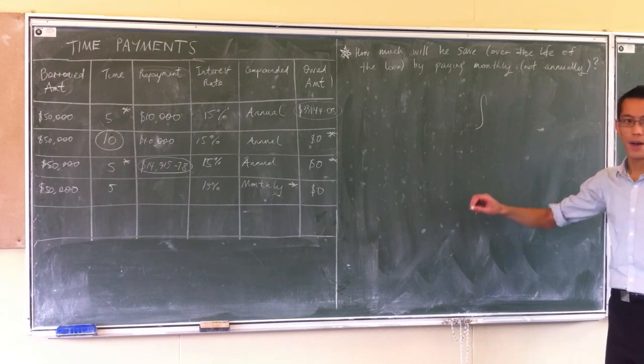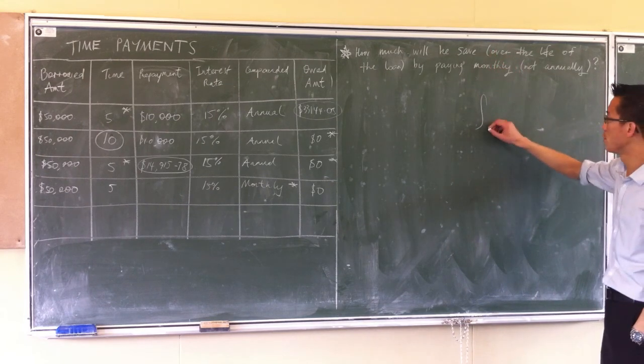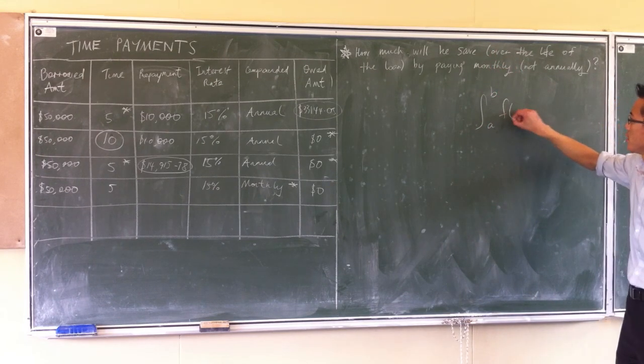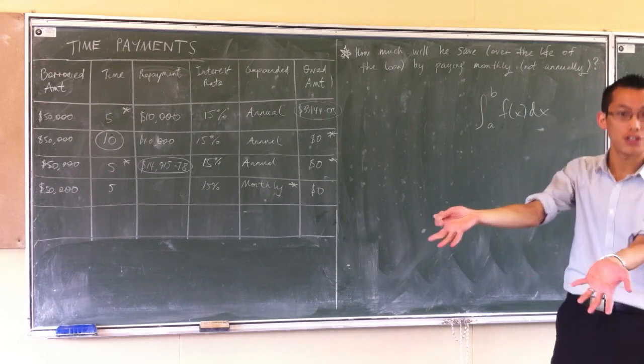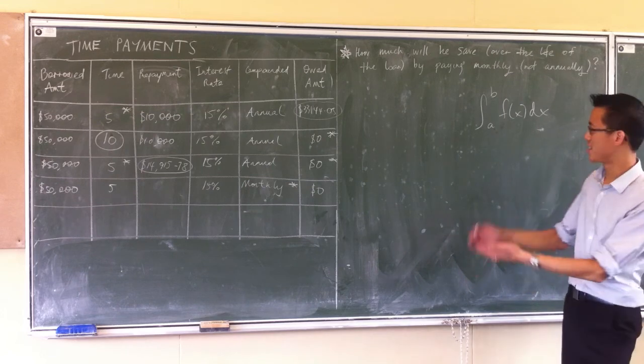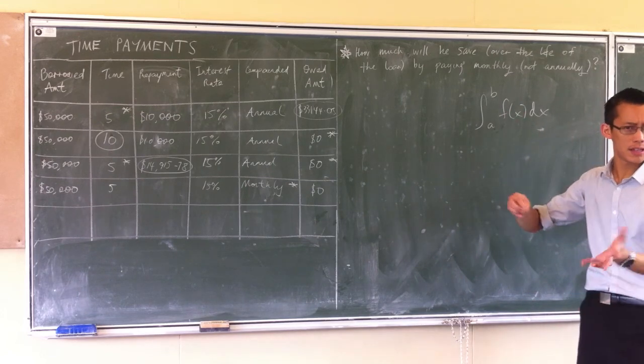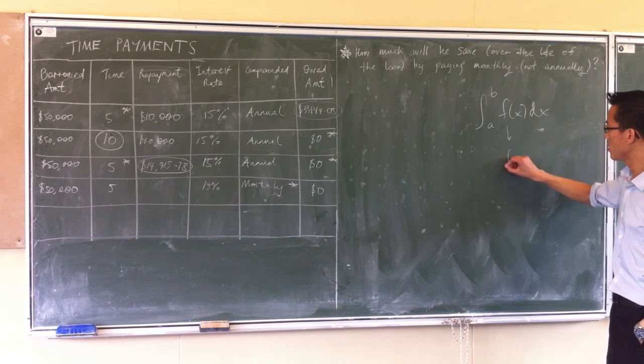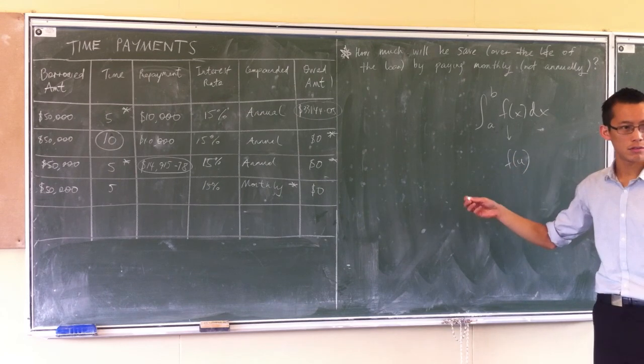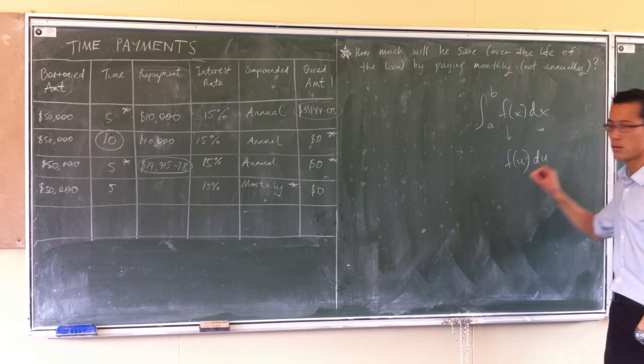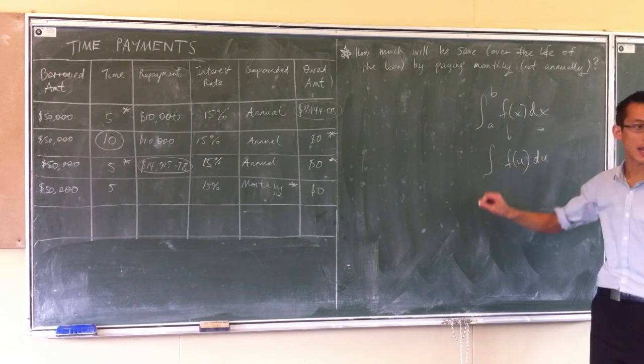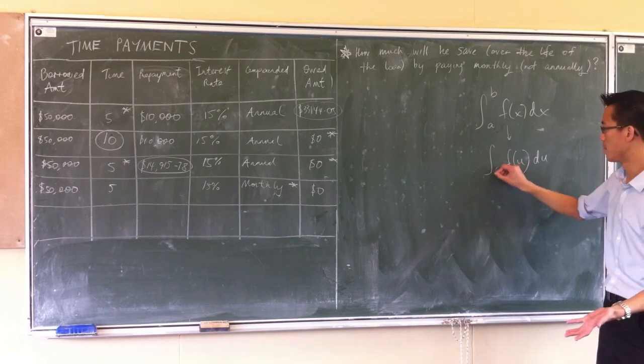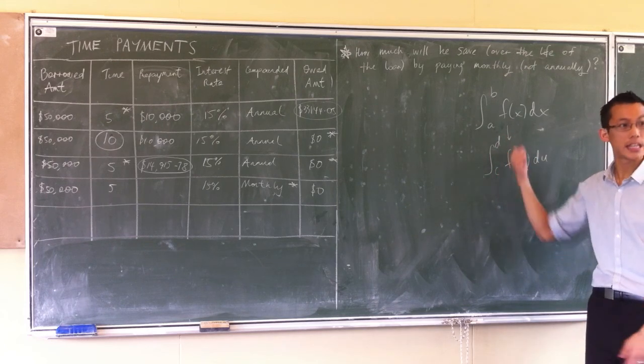And we give you something and we say, integrate, get a definite integral from A to B of some function. And then we say, and use this substitution. So, we change it into, in terms of X's, we change it to U's. You've seen that kind of question? So, what you end up with is you're integrating a function of U with respect to U. Now, when you do that, you can't just leave these limits as they were. You've got to change them to some other limits in terms of U instead of X.